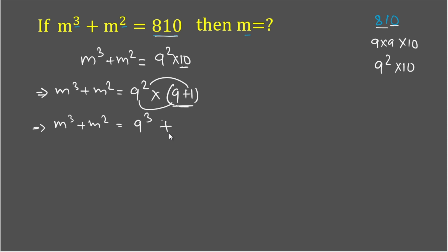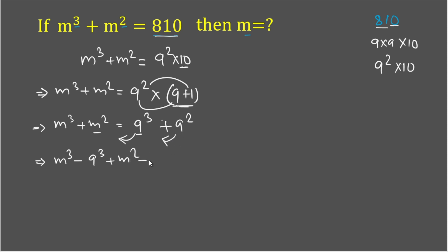Multiplying out, 9² × 9 = 9³ and 9² × 1 = 9². So the right-hand side becomes 9³ + 9². We now move all terms to the left-hand side: m³ - 9³ + m² - 9² = 0.